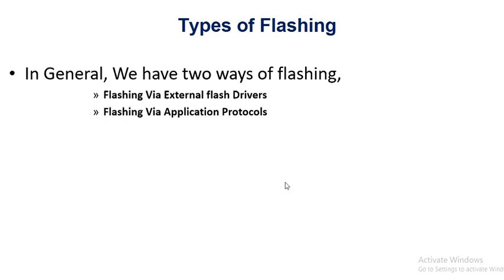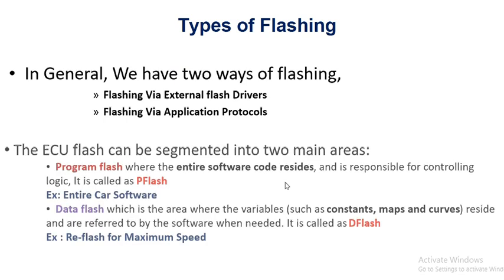Whatever kind of flashing you do — through JTAG or any other tool — it will be comprised within either external flash drivers or application protocols. Now, ECU flash can be segmented into two main areas: one is program flash, which is P flash, and another one is data flash, which is D flash.